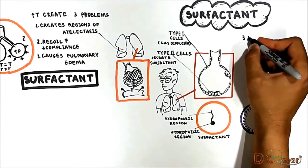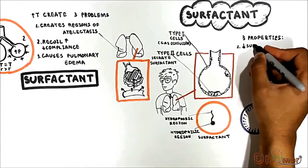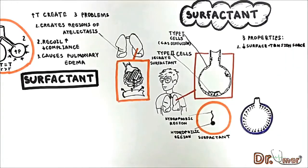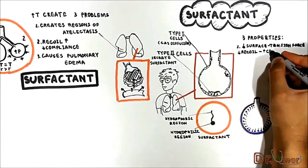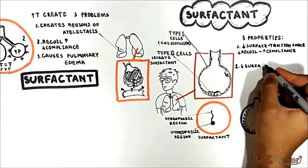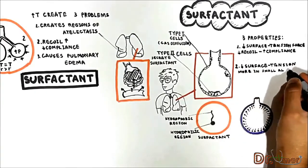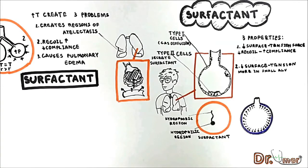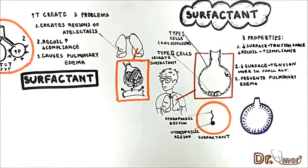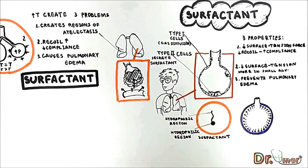This results in three important properties of surfactant. First, surfactant lowers the surface tension forces in alveoli, thereby lowering recoil and increasing lung compliance. Second, in two alveoli of different sizes, surfactant decreases the surface tension more in a small alveolus and prevents its collapse, because surfactant covers more of the total surface area of a small alveolus than a large one. Third, surfactant prevents pulmonary edema from developing. Because surfactant reduces the recoil force, pleural pressure remains close to atmospheric at negative 5 cm water, which is not transmitted to the pulmonary capillaries and is not a force promoting pulmonary edema.